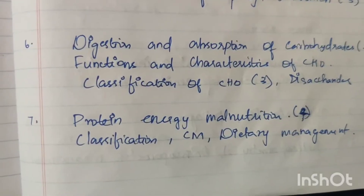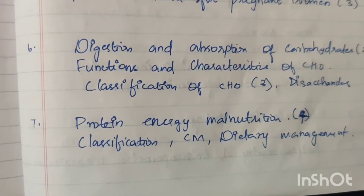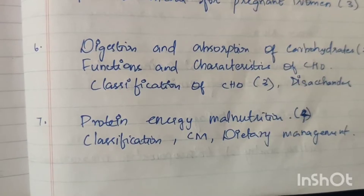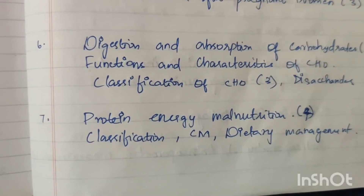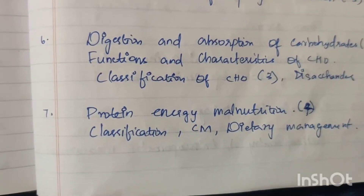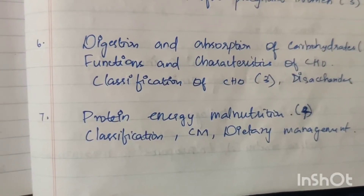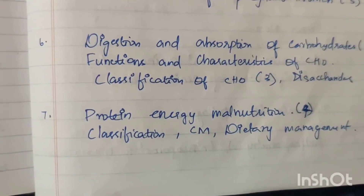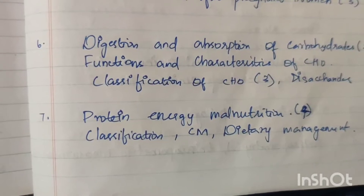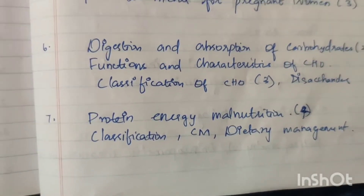Next: Protein Energy Malnutrition — 4 times. Calorie malnutrition — 2 times; that is the same and similar answer. Classification, clinical manifestation, and dietary management for protein energy malnutrition — these appear in the question.